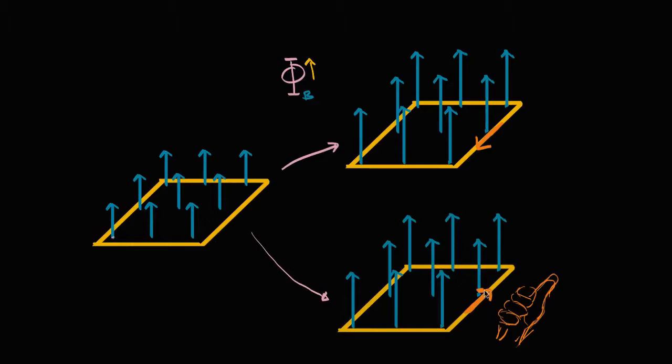So when I do that with my right hand — thumb in the direction of the current — we see a magnetic field being induced that wraps around. If we sample it at points right on the surface, the magnetic field induced would be additive to the existing magnetic field. It would increase the flux even more, making these vectors increase even more.